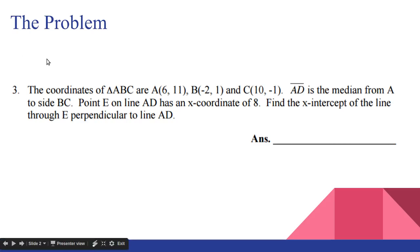The coordinates of triangle ABC are A(6,11), B(-2,1), and C(10,-1). AD is the median from A to side BC. That means it goes from A and then bisects side BC. So D is the midpoint of BC.